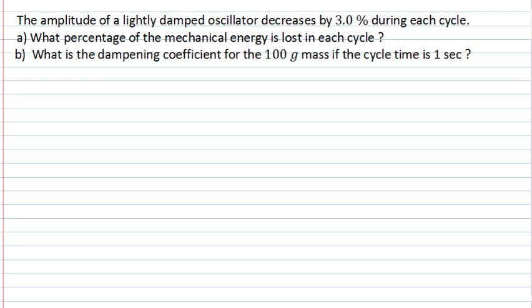This PhysCast deals with simple harmonic motion where dampening is present. Please pause the video and read through the question carefully. We're told we have a lightly damped oscillator, and due to this dampening, the amplitude is decreasing by 3% over each cycle. We're asked to ascertain two things: firstly, what is the percentage of mechanical energy which is lost in each cycle, and secondly, what's the dampening coefficient if the oscillator is a 100 gram mass and the cycle time is 1 second?